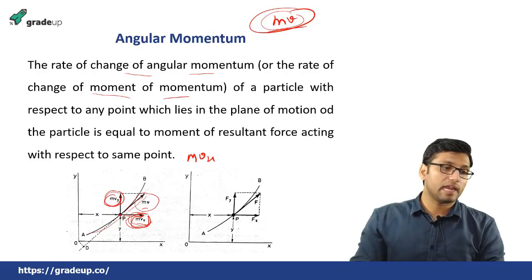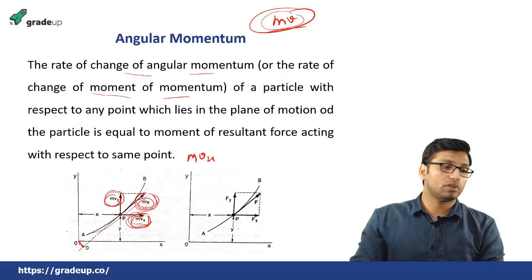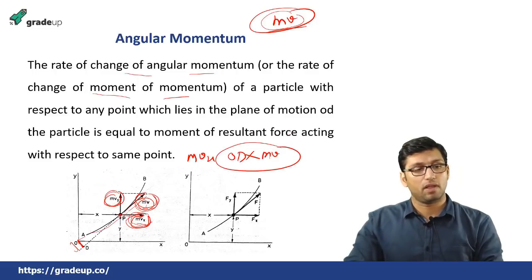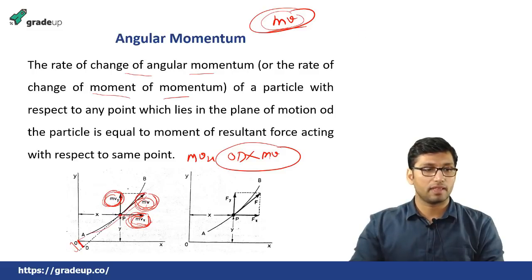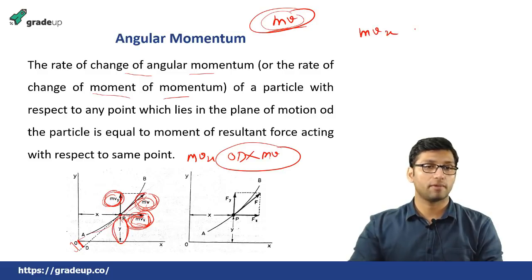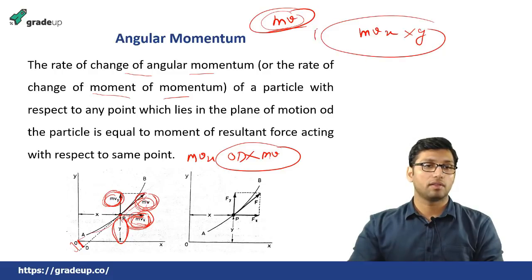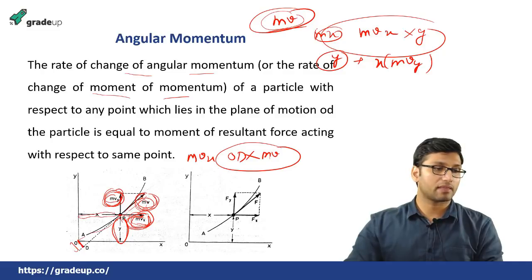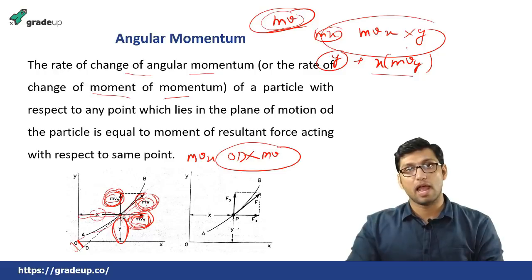Suppose this is the particle and the net momentum acting on it is M×V. The angular momentum will be equal to M×V multiplied by the distance from the origin O. So Od × MV gives the total angular momentum. Similarly, in the x direction the rate of change of angular momentum equals M×Vx multiplied by the distance y. In the y direction, it equals x times M×Vy, where x is the distance from the axis.